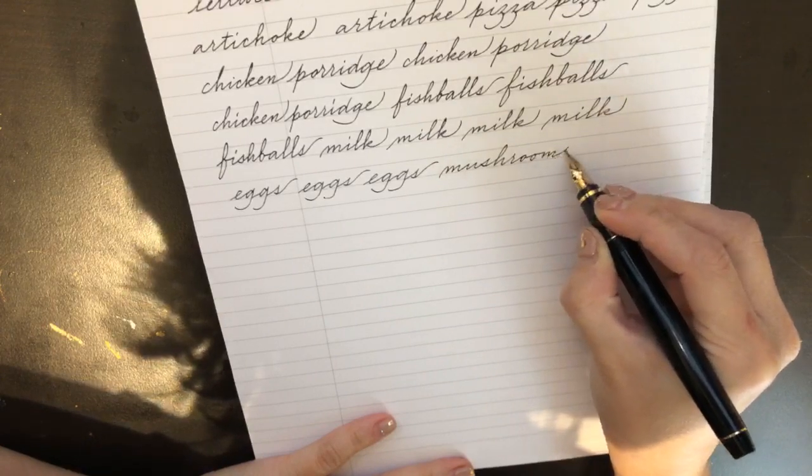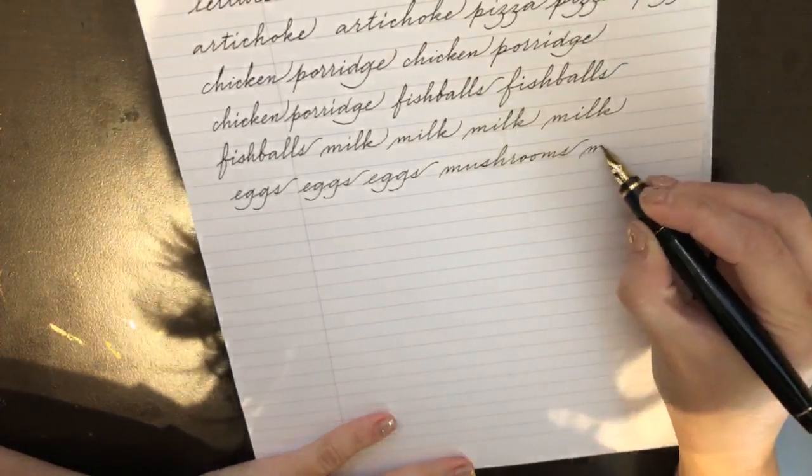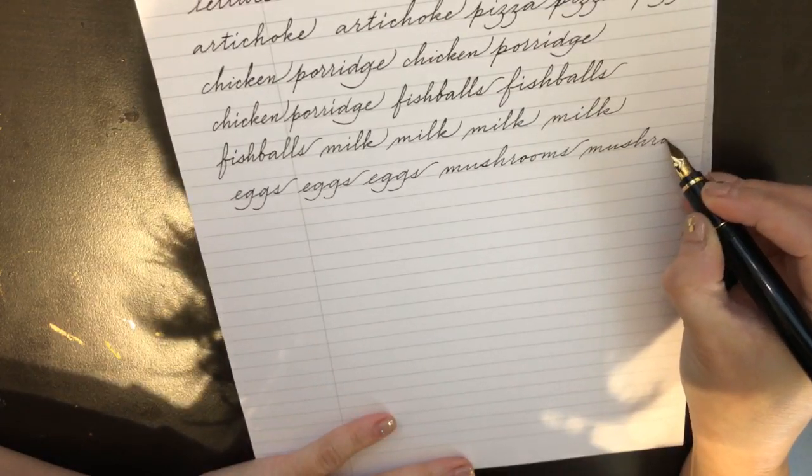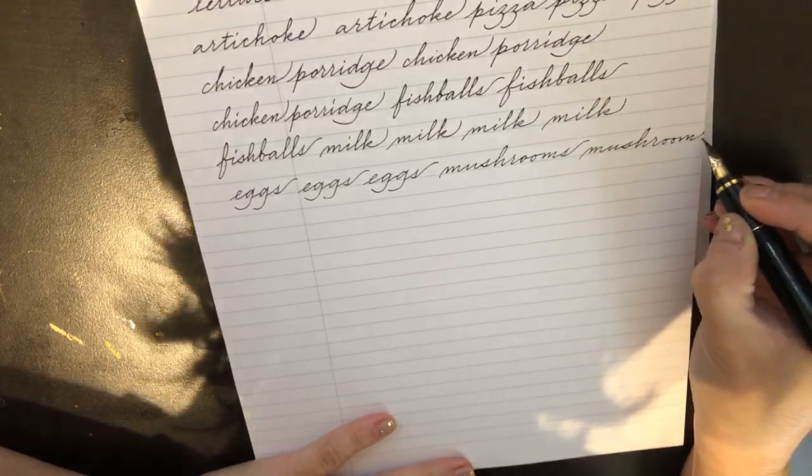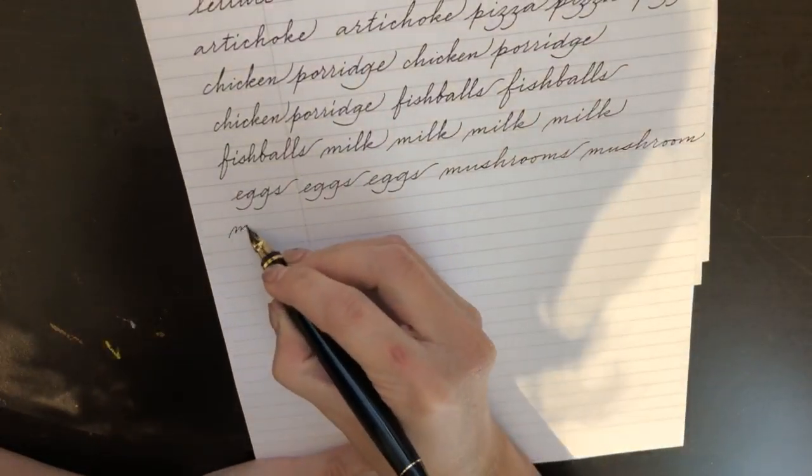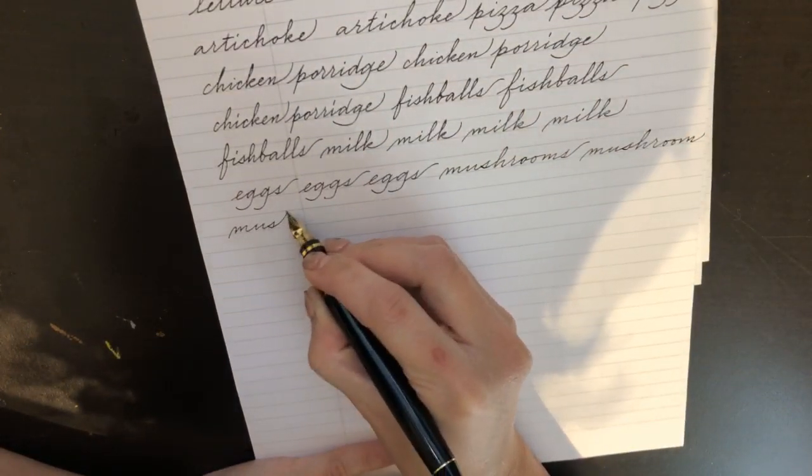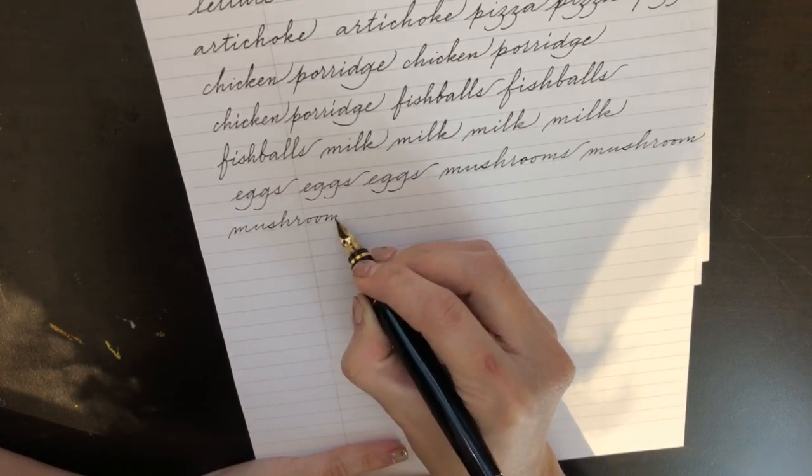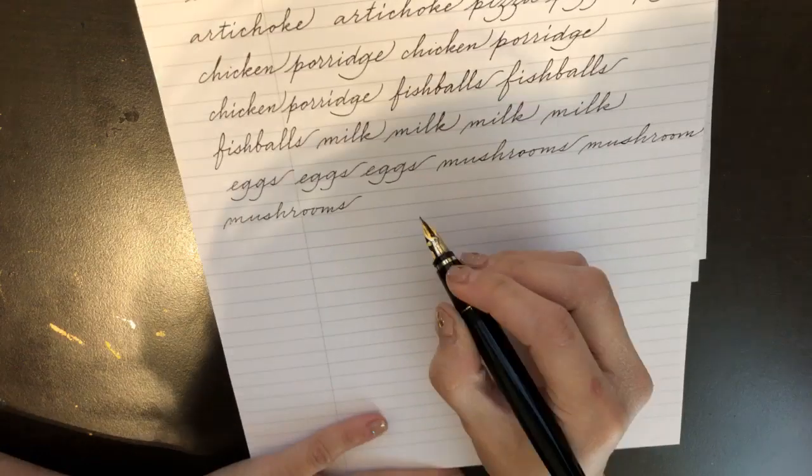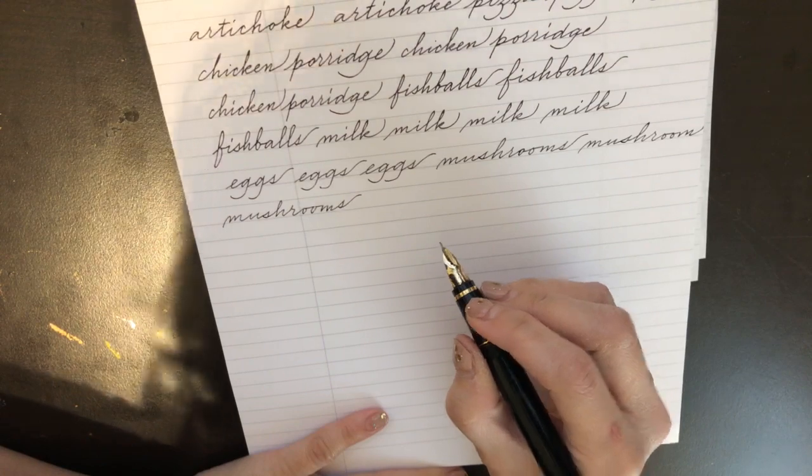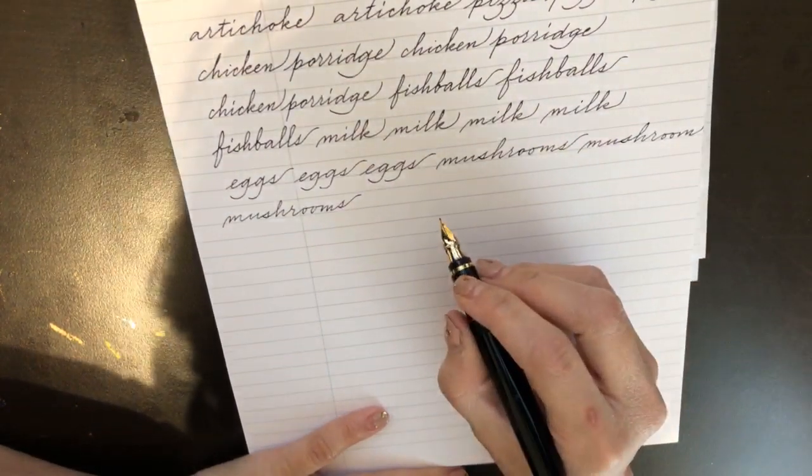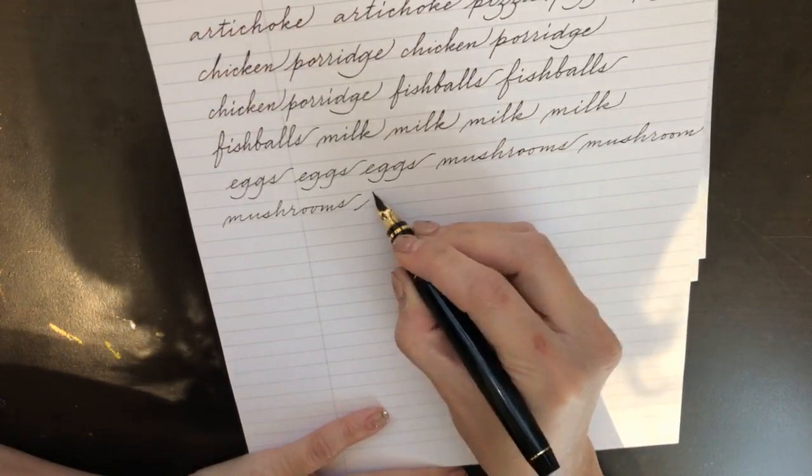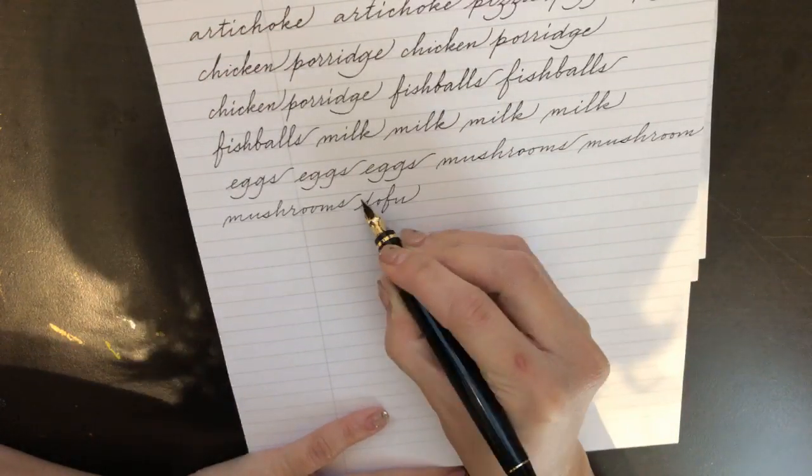Fun fact, do you know you could freeze eggs? You put them in ice cubes, like you got to break them. And once they're frozen, you can just pop them out of ice cubes and put them in a Ziploc bag. Mushrooms. I've got tofu, which is running out too.